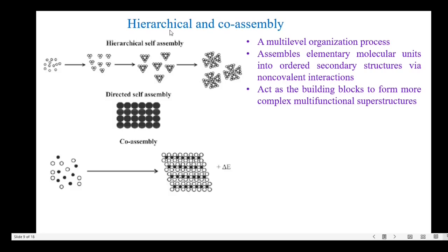The next topic is hierarchical and co-assembly. The static and dynamic self-assemblies are further classified into hierarchical and co-assembly. The first one is hierarchical self-assembly — it is a multi-level organization process. Here, the elementary molecular units assemble into ordered secondary structures via non-covalent interactions, and these building blocks form more complex multifunctional structures.